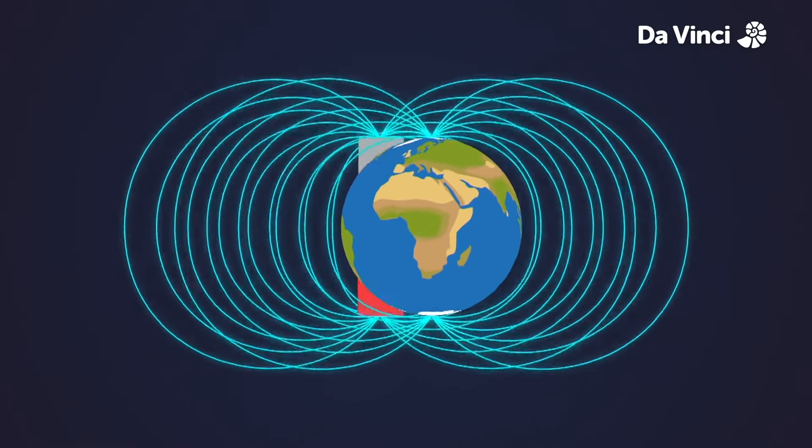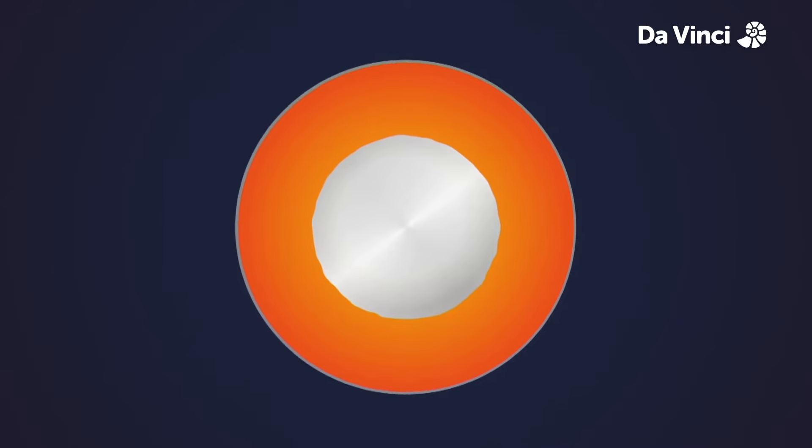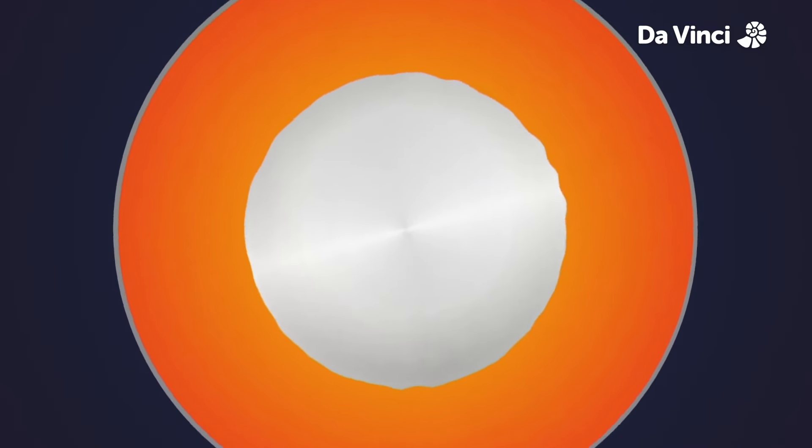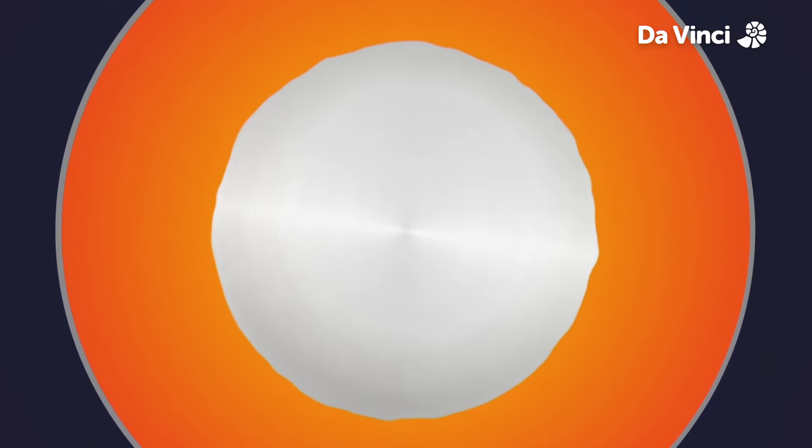Our Earth is a gigantic magnet. Its core is a huge sphere made of rotating nickel and iron. The rotation produces electricity.